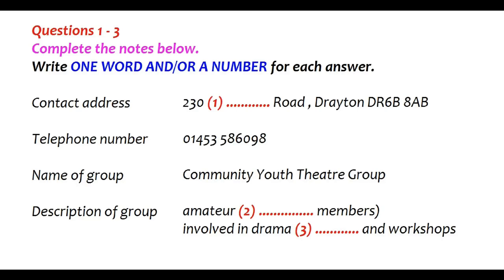The test is in four parts: part one, part two, part three, and part four. Now look at part one. You will hear a woman, Paula, phoning her friend Ralph about an application to the local council for money for their drama club. First you have some time to look at questions one to three.